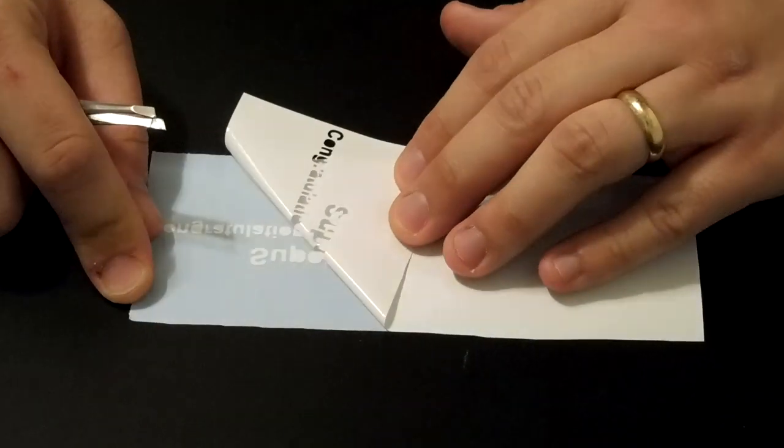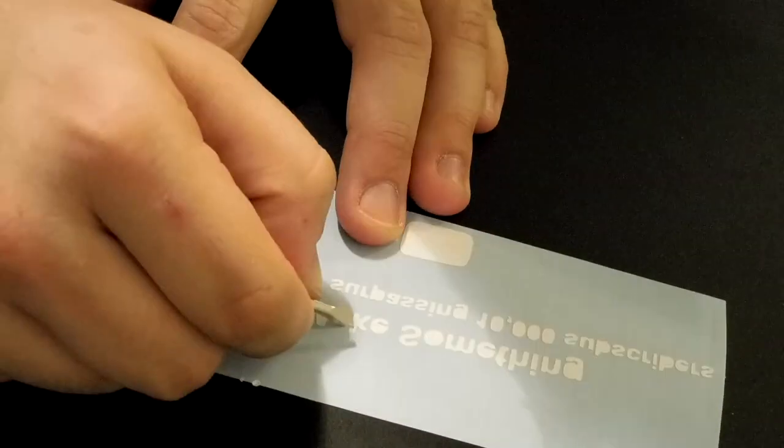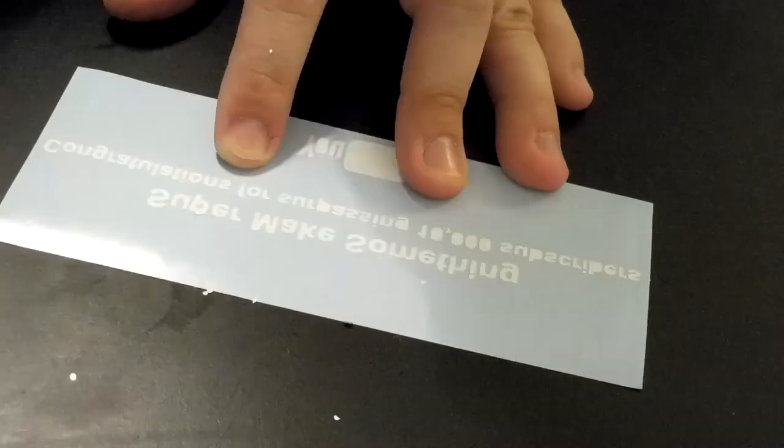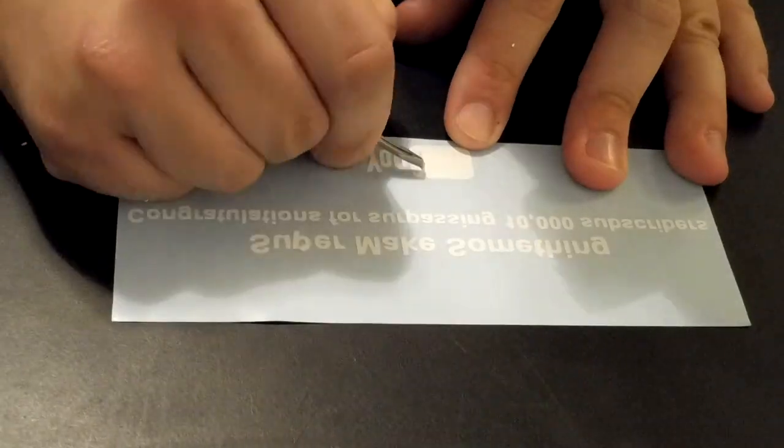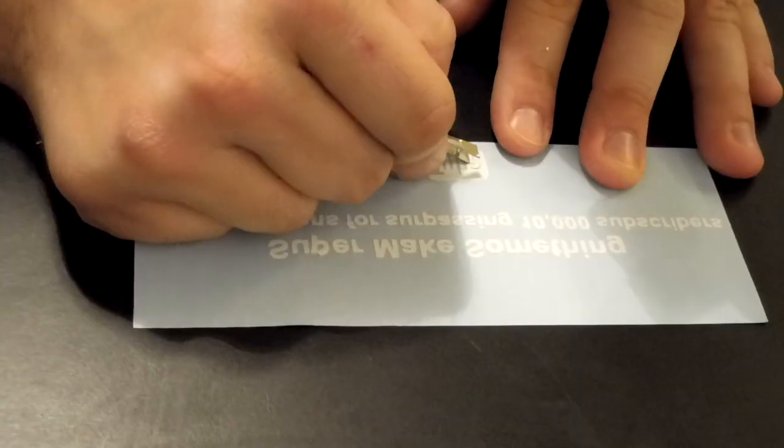Once everything finished cutting, I unloaded the vinyl and peeled off or weeded the excess material from the backing sheet using a pair of tweezers. During this step, I made sure to work slowly and carefully in order to avoid accidentally removing some of the smaller letters.